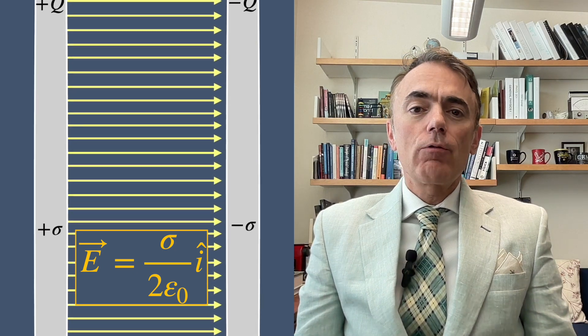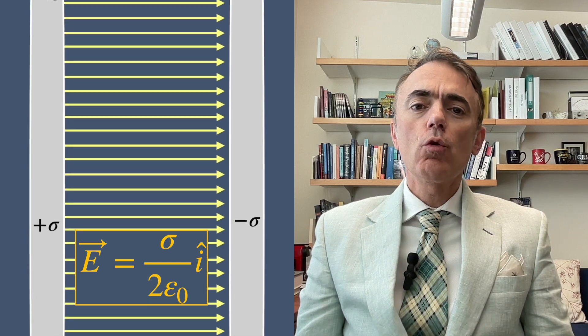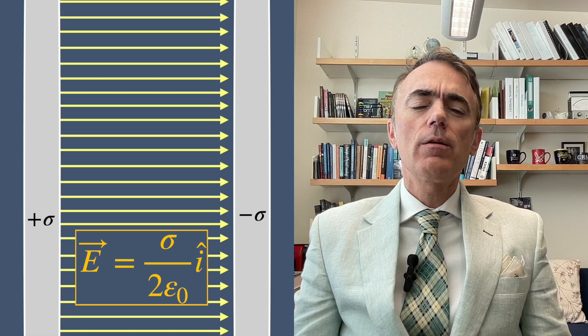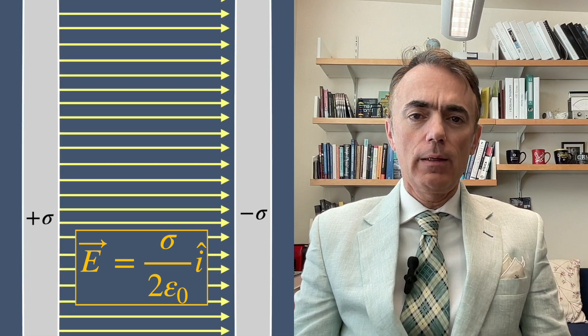The total electric field between the plates is directly proportional to the surface charge density and is uniform across the entire region between the plates.